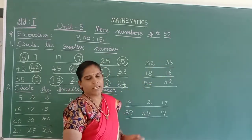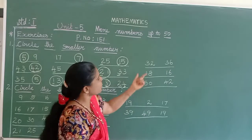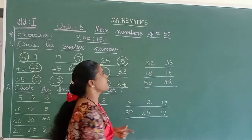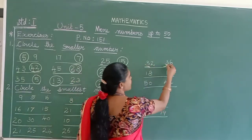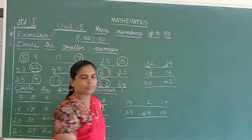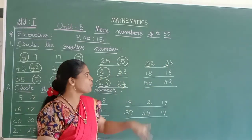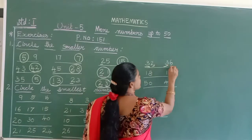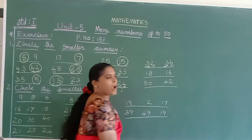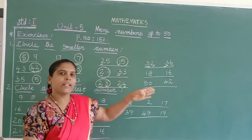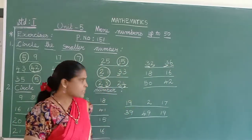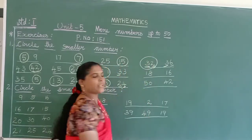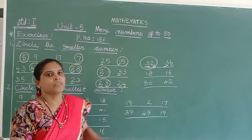Next: 32 and 36. Both are 2-digit numbers. Come to the tens place — both are the same, 3. So move on to the ones place: 2 and 6. Which is small? 2 is smaller than 6. So 32 is smaller than 36.